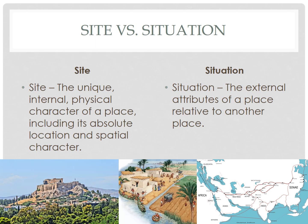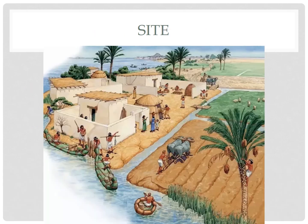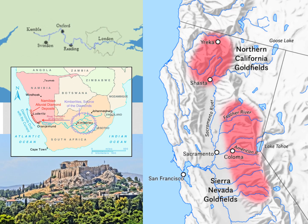Site refers to the unique internal physical character of a place, including its absolute location and spatial character. When we talk about site characteristics of early cities, we're talking about the actual place or location of the settlement — what climate did these areas have, how much available water was there. Early cities were on sites in river valleys with productive agricultural land and water that could be used to irrigate crops. But later cities were influenced by other site characteristics as well.